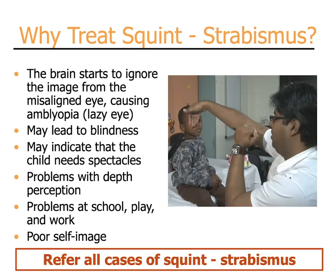Amblyopia or lazy eye should be detected and treated before five years of age. Many times by age five to seven or eight, it is already permanent.